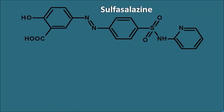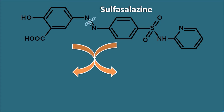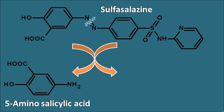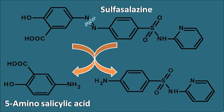You can see the structure of sulfasalazine with its two components. The azo bond is cleaved to give the active metabolites. One component is 5-aminosalicylic acid - the carbon bearing the carboxylic acid is given the first number, so the amine group gets the fifth position. The other part is sulfapyridine, because it is a sulfonamide with a pyridine structure.